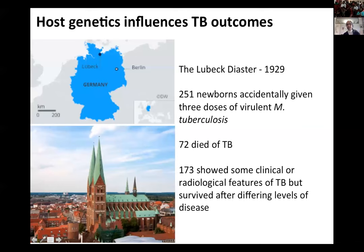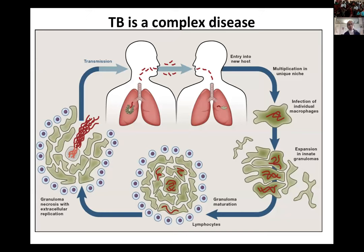Some individuals didn't even get disease, and a third got disease but survived. This is a stark example of how host genetics can influence TB. Looking at what we call the life cycle of this disease, let's get everyone on the same page.